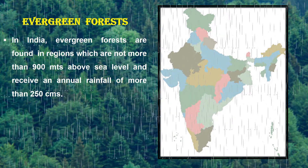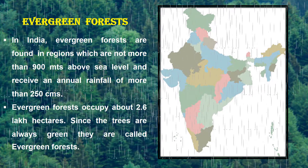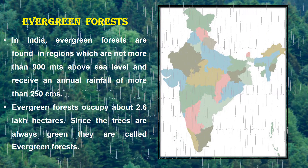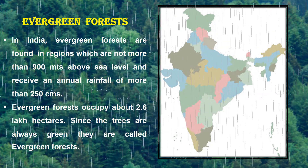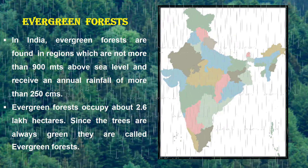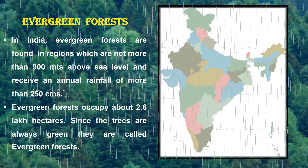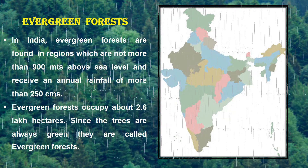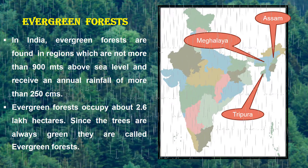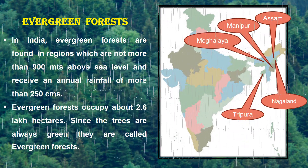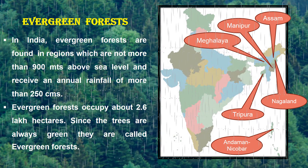Evergreen Forests. In India, evergreen forests are found in regions which are not more than 900 meters above sea level. They receive an annual rainfall of more than 250 centimeters. This type of forest is found in the Western Ghats, northeastern states of Assam, Meghalaya, Tripura, Manipur, Nagaland, and Andaman and Nicobar Islands.